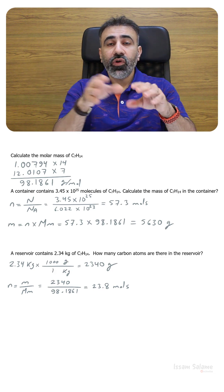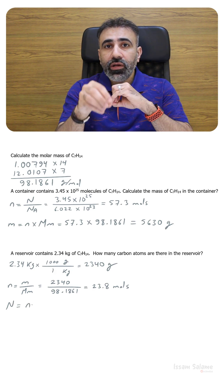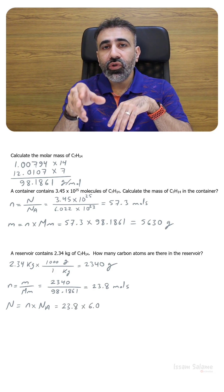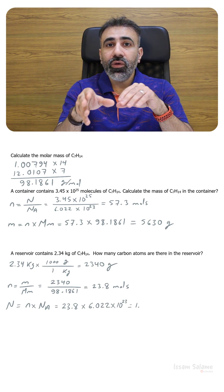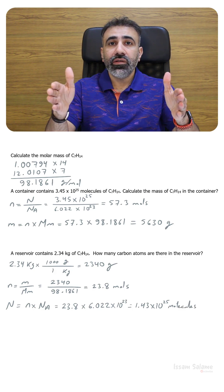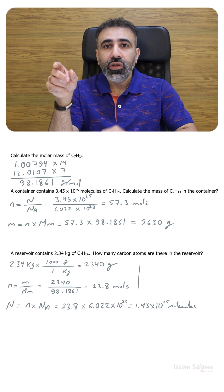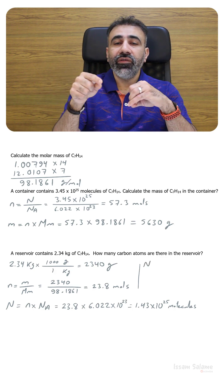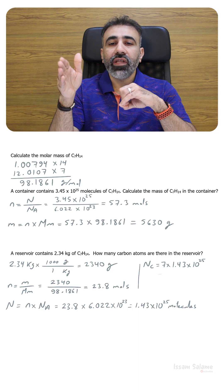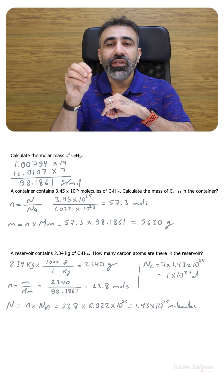After we get the number of moles we find the number of molecules of C7H14 by multiplying by Avogadro's number: 23.8 times 6.022 times 10 to the power 23, giving 1.43 times 10 to the power 25 molecules. Since each molecule has 7 carbon atoms, we multiply by 7 to get the number of carbon atoms: 7 times 1.43 times 10 to the power 25, which equals 1 times 10 to the power 26 atoms of carbon.